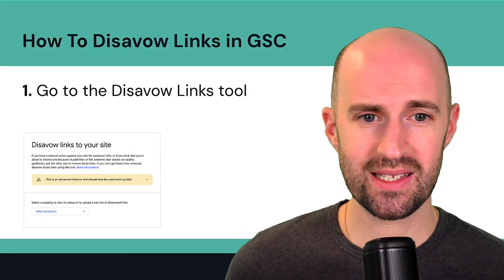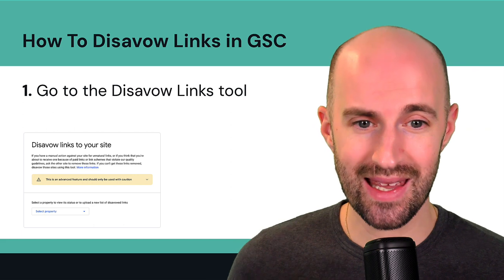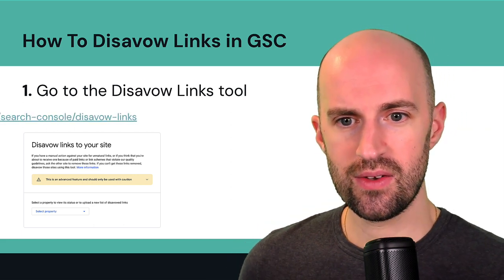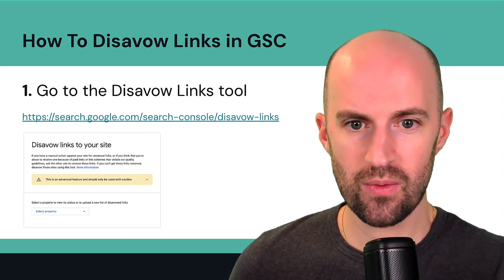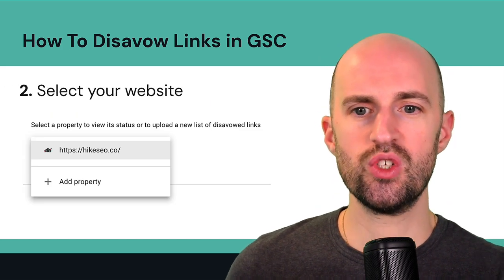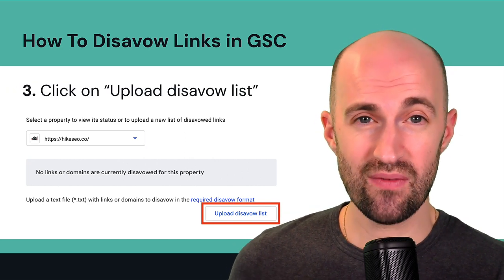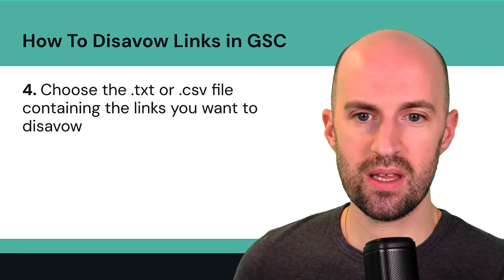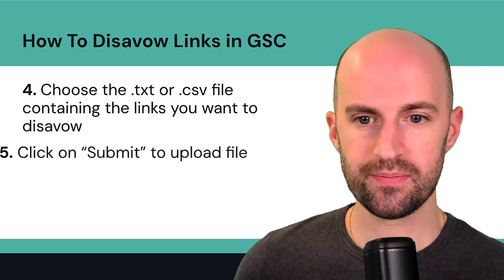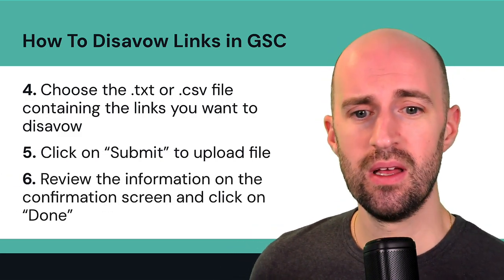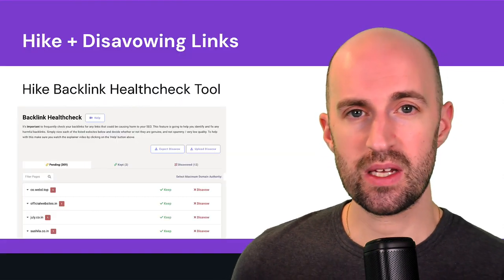How do you disavow these links in Google Search Console? Once you have your file, go to the disavow links tool in Google Search Console at the /disavowlinks path. Select your website from the dropdown, then click 'Upload Disavow List'. Choose your .txt or .csv file containing the links you want to disavow, click submit to upload, review the confirmation screen, and click done. That's pretty much the steps.